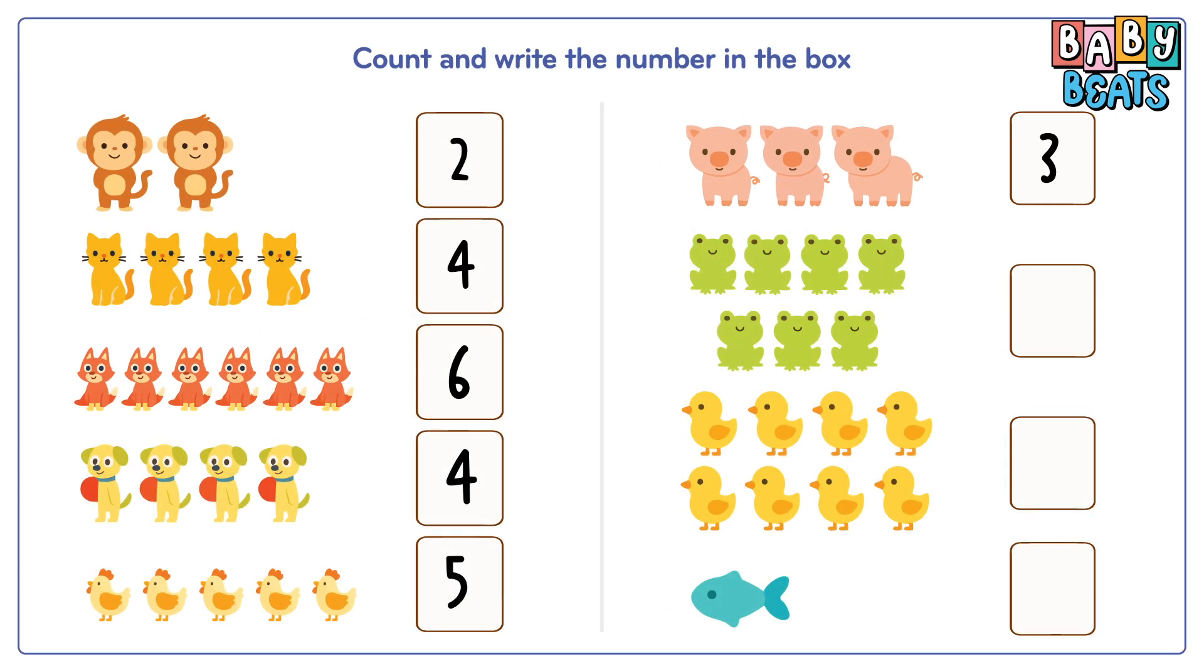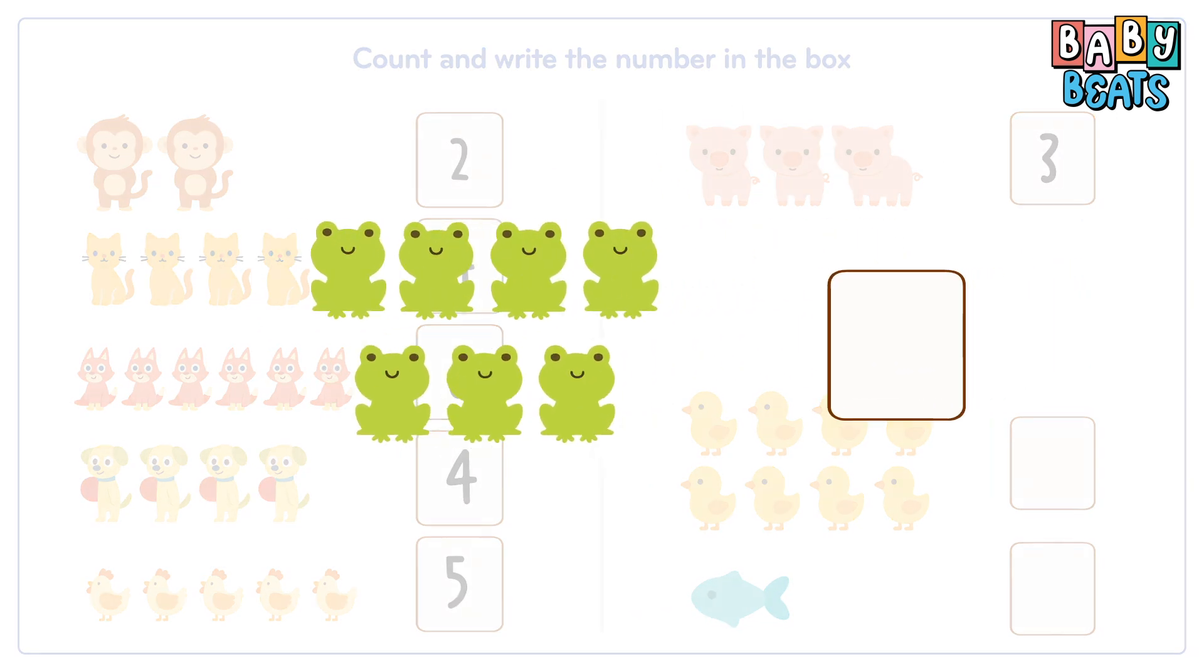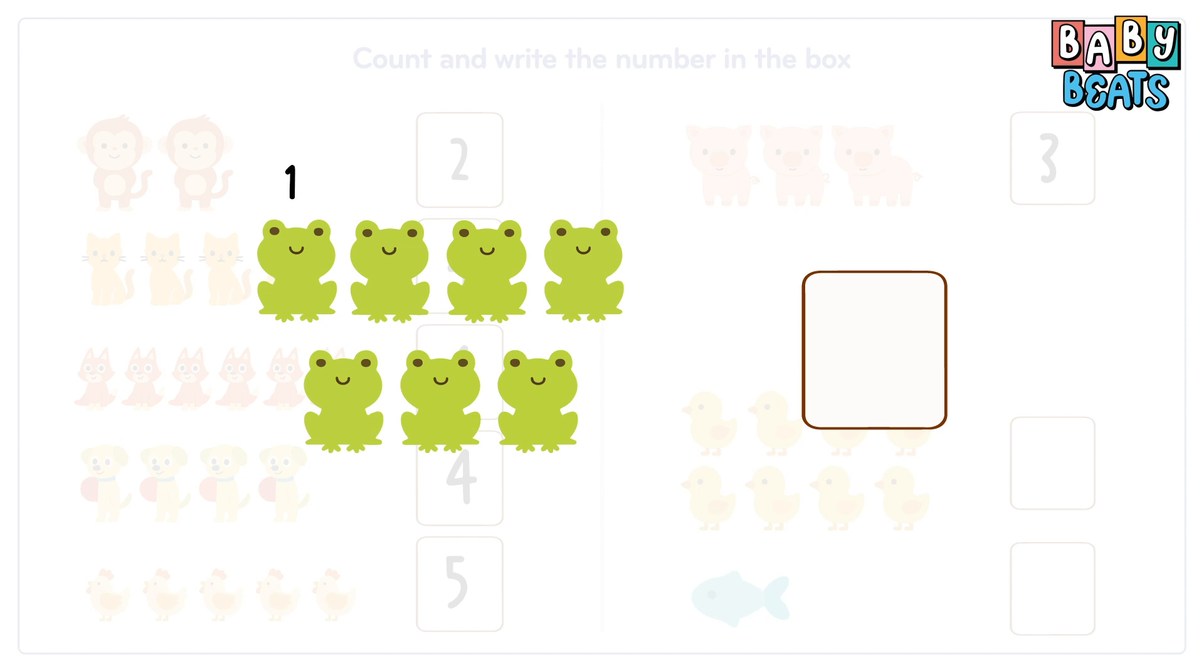Next, the frogs. One, two, three, four, five, six, seven. That makes seven frogs. Write number seven.